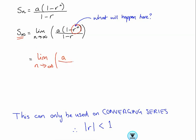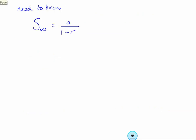So a times one is just a, so I'm not going to write anything else and nothing's happening to the denominator. So there we have it. And just remember it can only be used on converging series, which basically means the common ratio has to be less than one. So you need to know that formula off by heart, it's very easy.